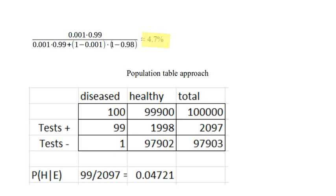When we do that, we get a remarkable result. The chance that I actually have the disease, even though the test is 99% accurate by some measures, is only 4.7%. Do the arithmetic yourself and you will convince yourself that there is a less than one in 20 chance of actually having the disease. That is a lot of algebra, a lot of arithmetic, a lot of words — and if you're a nursing major or pre-med, you're probably eating this up, while the rest of us might be wondering if we're in the right class.